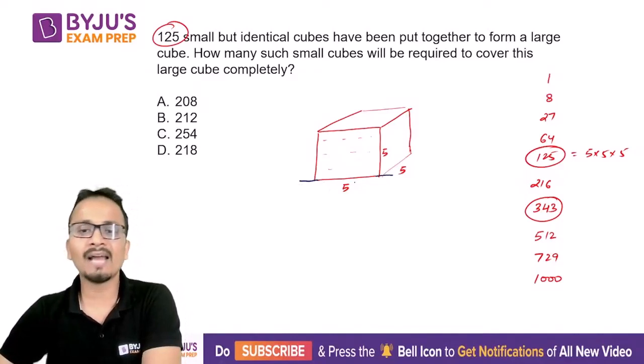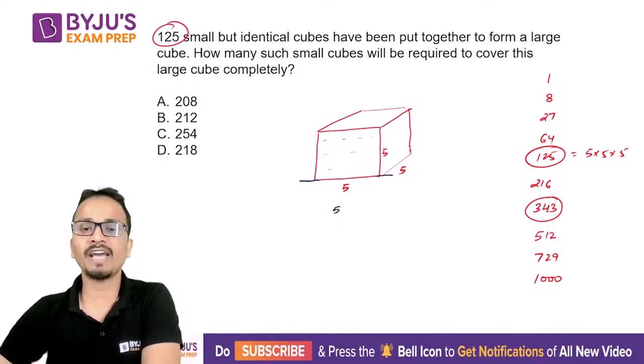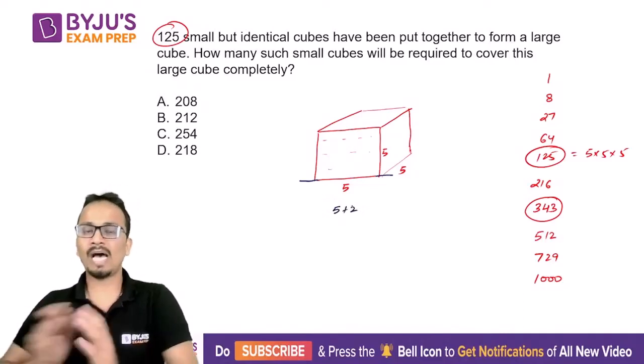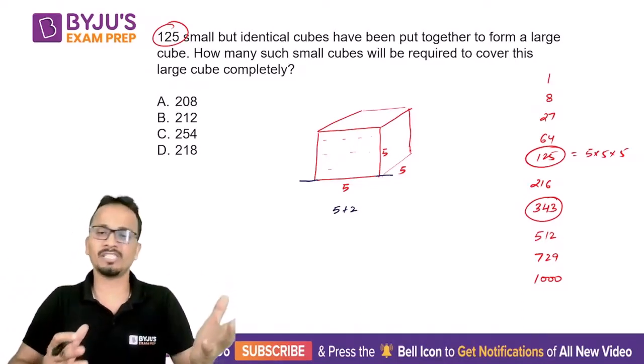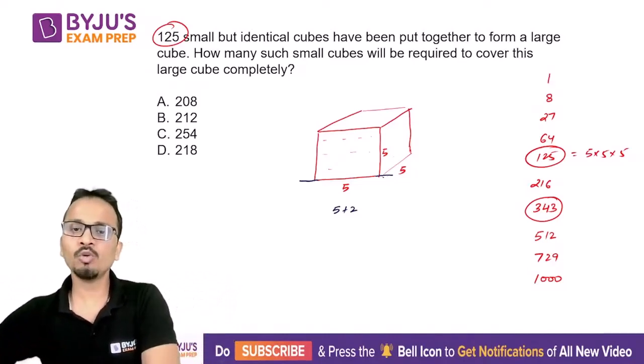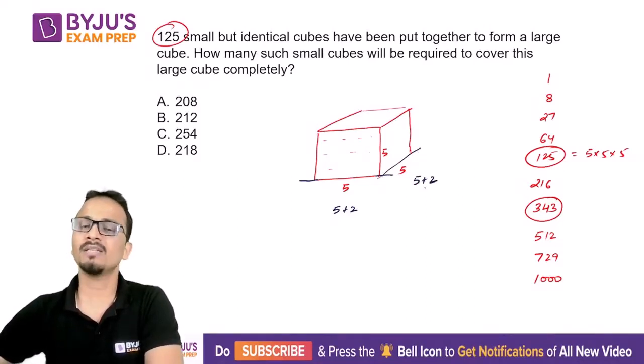So to cover the entire length, the length of the new cube should be 5+2—I'll require one extra cube on the right side and one extra on the left side. Similarly, to cover the entire width, I will require a new cube whose width is two more than the width of the original cube.